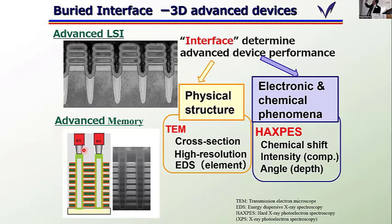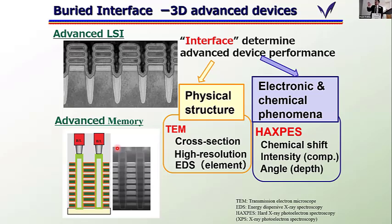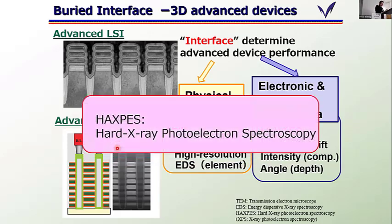At all the interfaces — in the stacked transistor structure, we have six interfaces. Are they all the same? They should all show the same fantastic performance. So we want to know how the interfaces behave chemically and electronically, rather than just their physical structure. That is why we need HAXPES.